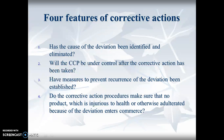Four features of corrective actions: Has the cause of the deviation been identified and eliminated? Will the CCP be under control after the corrective action has been taken - we went through and destroyed it or fixed the cooler, but did it actually fix it? Have measures to prevent recurrence of the deviation been established? Do the corrective action procedures make sure that no product injurious to health or otherwise adulterated because of that deviation has entered commerce?